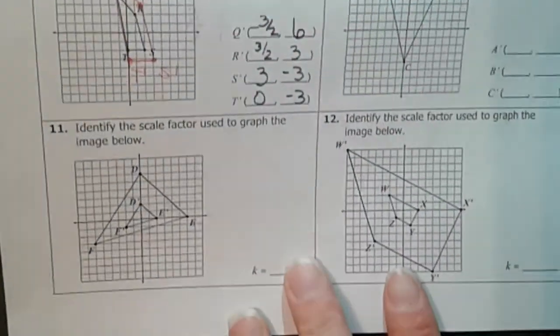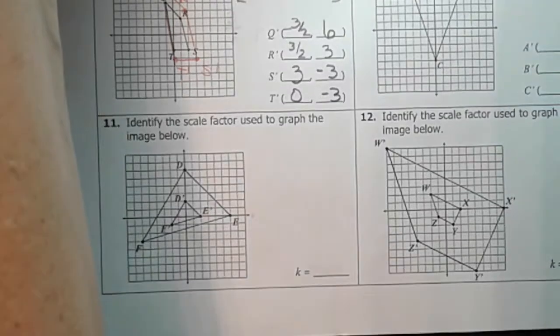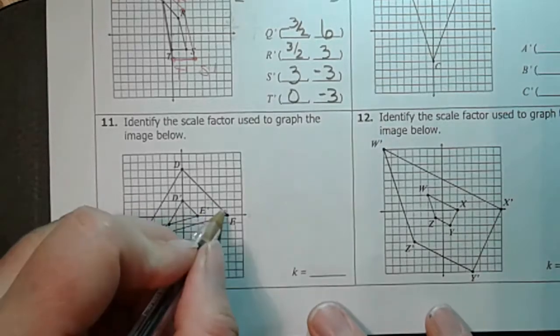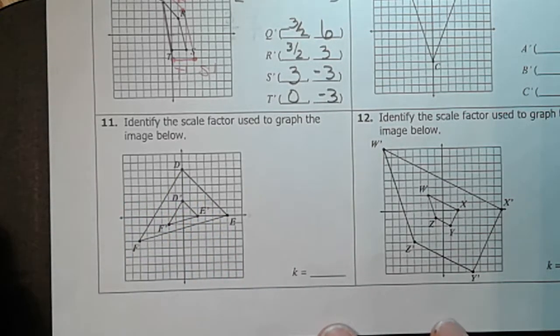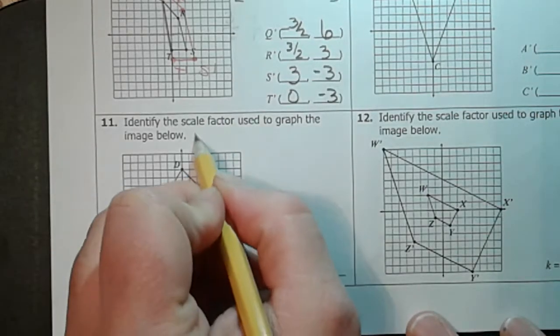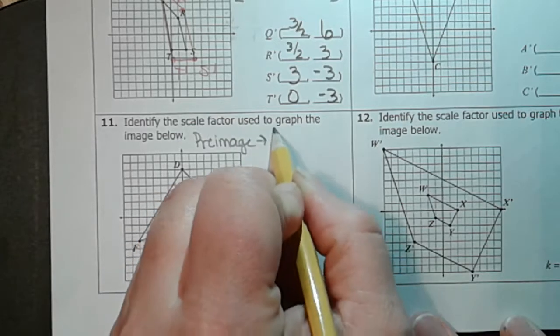All right, let's take a look at these ones below. So this says identify the scale factor used to graph the image below. So we have an image. It's the image, right? Because that's not the prime. And then we have the prime image. So we can say the pre-image to the image.